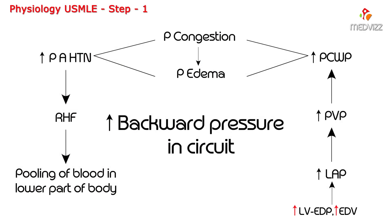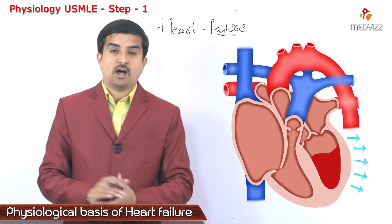There would be venous pooling as well as pulmonary congestion. If the left ventricle is not contracting properly, there would be an increase in left ventricular end diastolic pressure and volume, leading to increased backward pressure — increase in left atrial pressure, pulmonary venous pressure, and finally pulmonary capillary wedge pressure — leading to pulmonary congestion and pulmonary edema. Pulmonary edema causes pulmonary artery hypertension, which leads to right heart failure, which in turn causes pooling of blood in the lower part of the body.